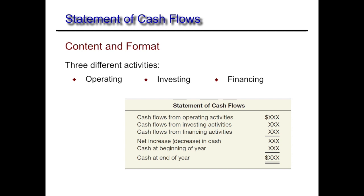There are three sections of the Statement of Cash Flows, as presented here, and those three sections will sum to the change in cash. Some of them may be negative, some may be positive, but we sum them all together, and that number added to our beginning cash balance should equal our ending cash balance on the balance sheet.